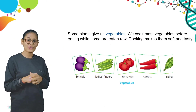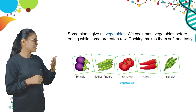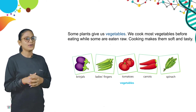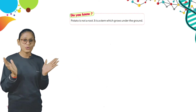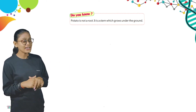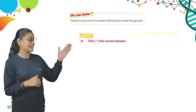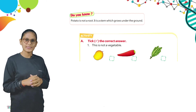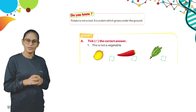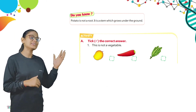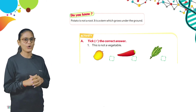Now look at the picture — there are some pictures of vegetables. Which is not a vegetable? When you look at your picture, you can identify that mango is a fruit. So tick the mango.